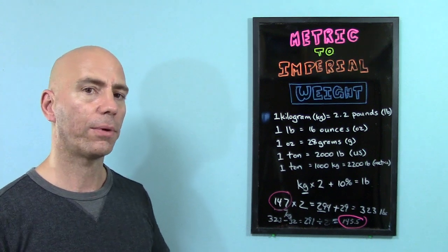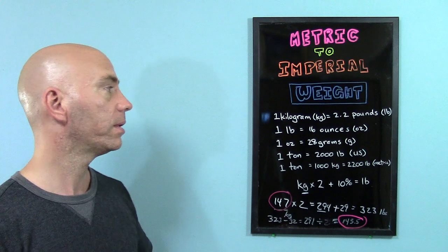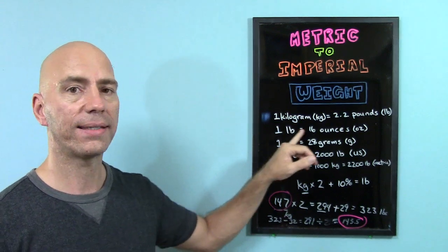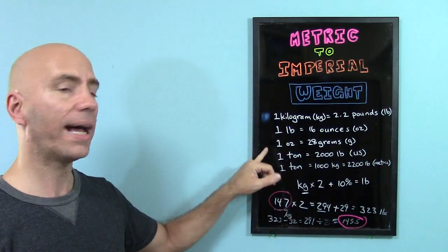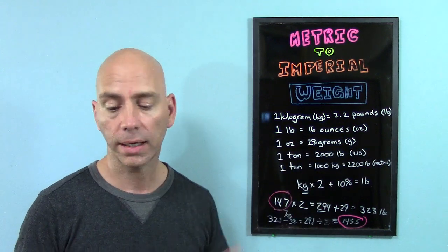Try to remember that 1 kilogram is 2.2 pounds, and 1 pound has 16 ounces, and 1 ounce has 28 grams.